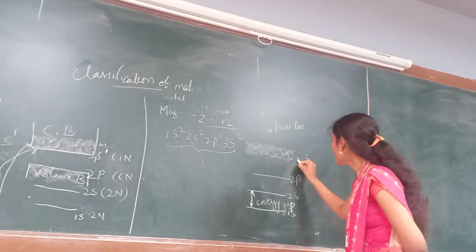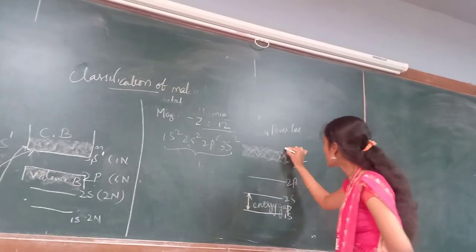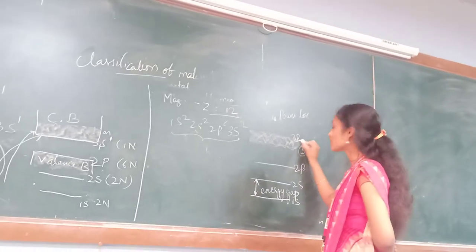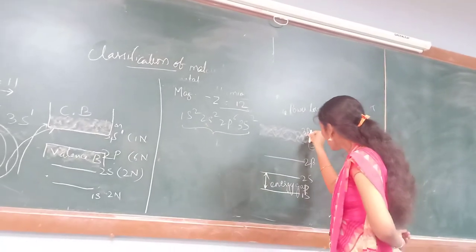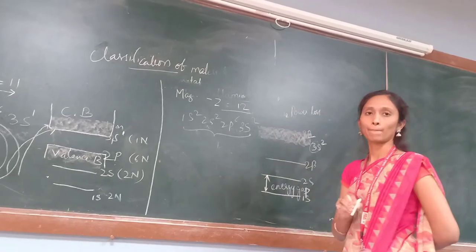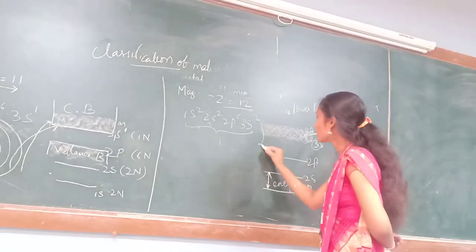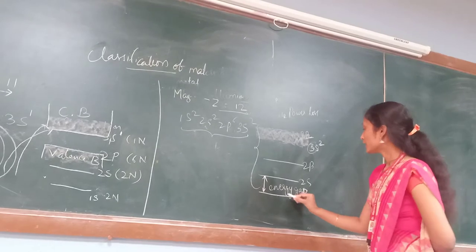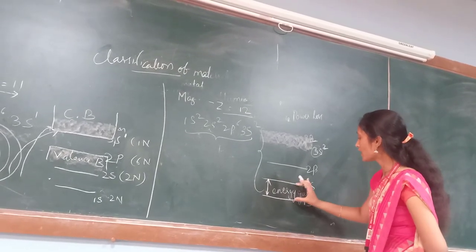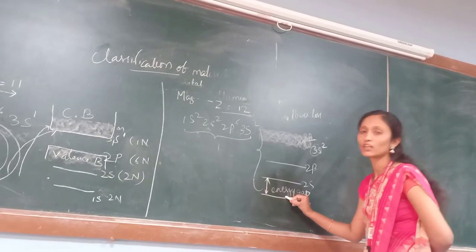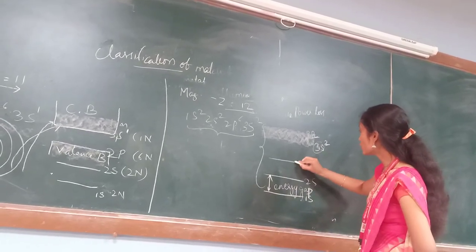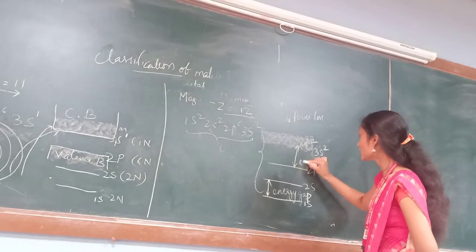We cannot say magnesium is a non-conductor — it is also a conductor. In the same shell it is fully bonded, but the 3p state is free, and this 3p overlaps with the 3s state. This is also a good conductor. The gap between first and second orbit is called the energy gap, and from 2s to 2p is also an energy gap.